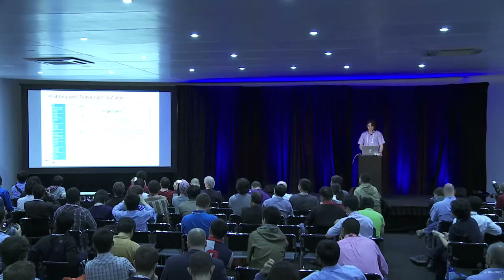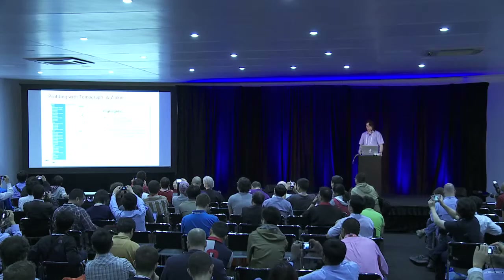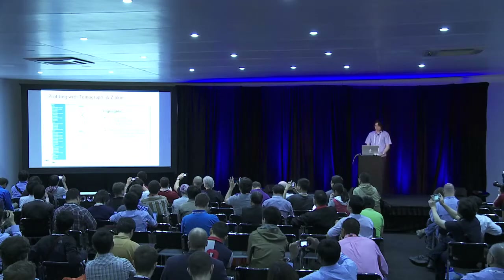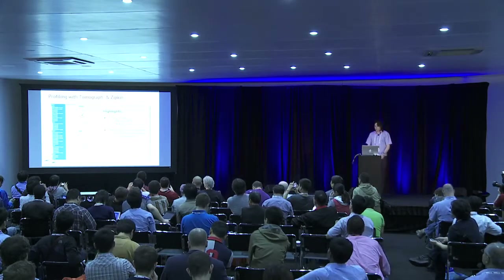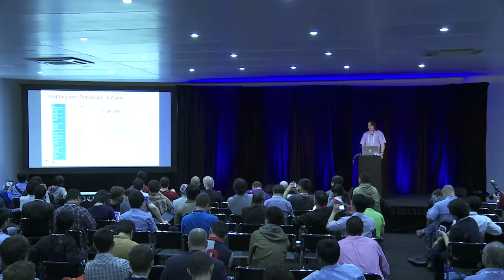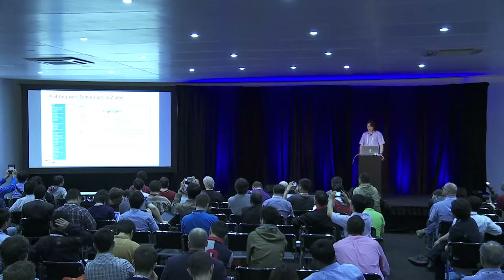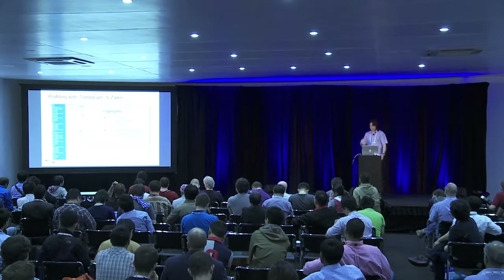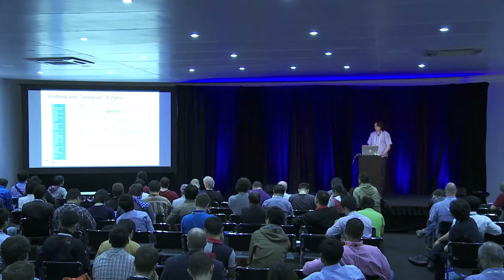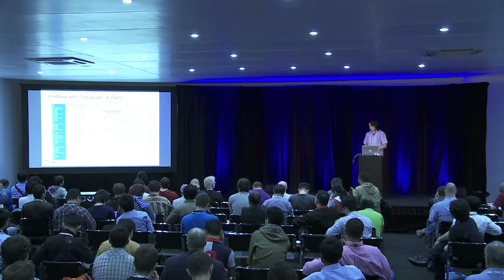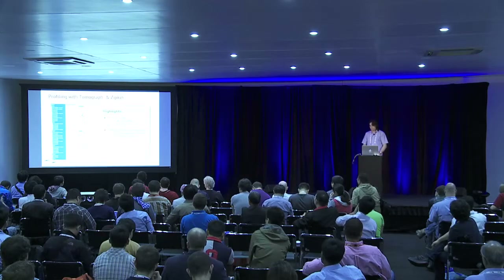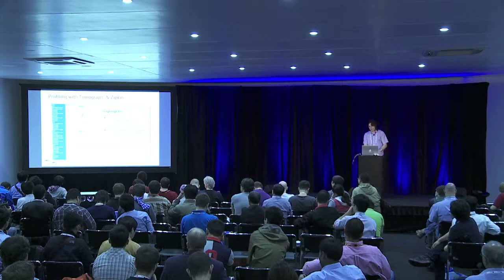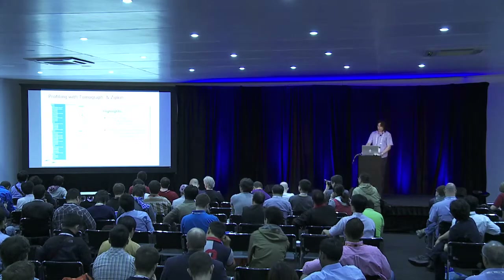We get interesting profiling data from Tomograph and Zipkin. For example, launching just three VMs produces more than 300 DB requests and more than 17 RPC calls. When deleting three VMs under high load, there is about one minute of a global lock on quotas tables from a single user, meaning these operations were done sequentially, not simultaneously. This is a big performance issue in OpenStack.